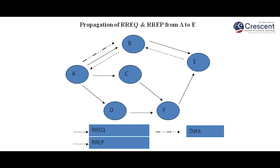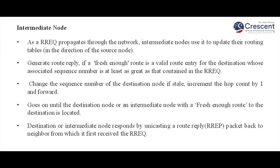Node B, being a neighbor, once it receives the route request from A, checks its routing table whether it has a route to the destination. If it has a route, it checks the sequence number — used to find out the freshness of information. The sequence number in the routing table must be greater than or equal to the sequence number in the route request packet for it to give a reply. Otherwise, it simply forwards the message along the remaining route. This is the duty of the intermediate node.